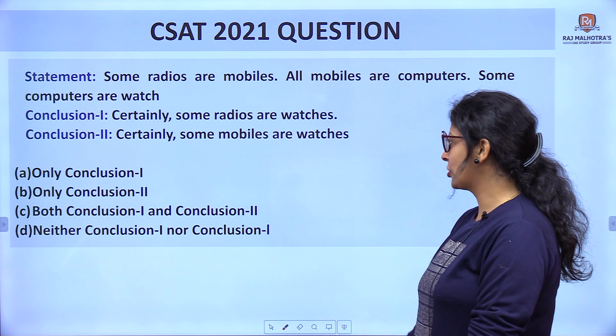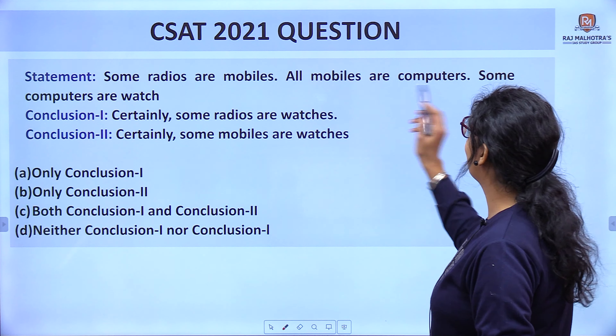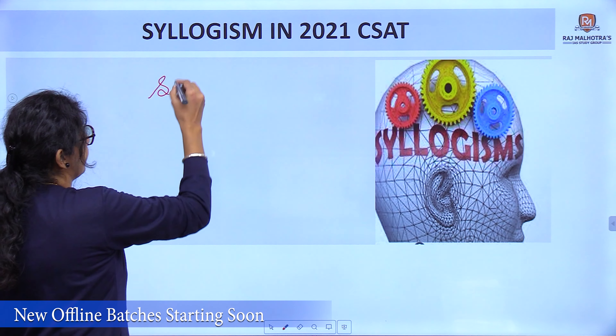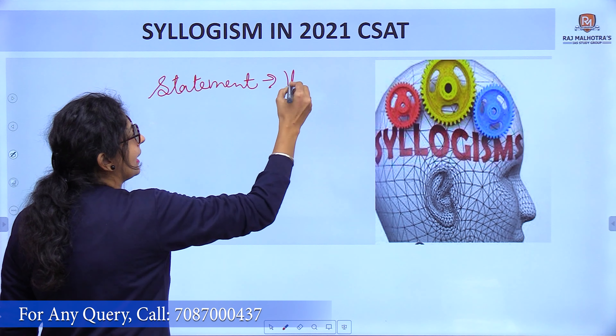Hello everyone, welcome to Raj IAS study group. My name is Harjit Kaur and I am your reasoning tutor. In today's session, we are going to discuss syllogism questions that were asked in CSAT 2021. As you have seen earlier, we have discussed the syllogism asked in CSAT 2022, and now we have moved to CSAT 2021. Syllogism is a very interesting and scoring topic — every year two or three questions are asked from this topic. Let's check the questions from the paper and discuss the concept.